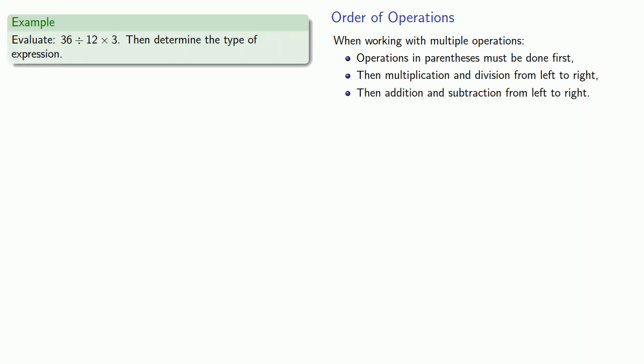How about this expression? So here, again, no parentheses. So now we want to perform multiplication and division from left to right. So first we deal with 36 divided by 12. That's 3. And then multiply this by 3. And since the last operation performed was a multiplication, 3 times 3, then our expression, 36 divided by 12 times 3, is going to be called a product.